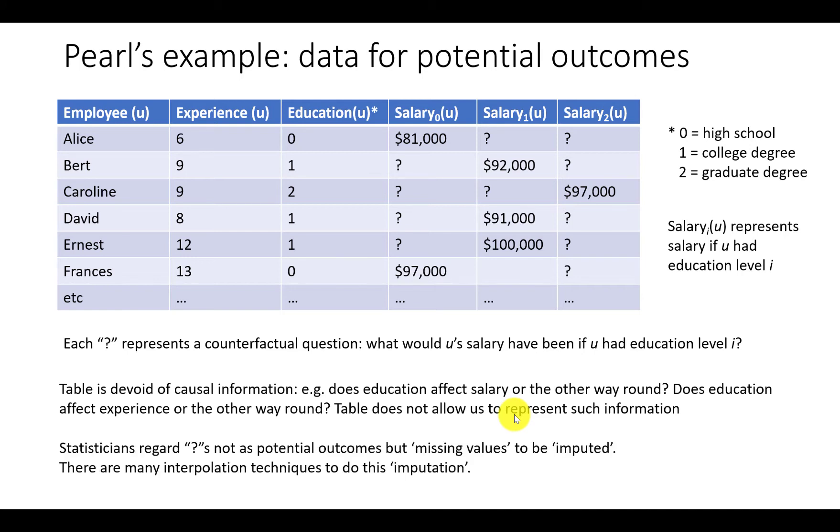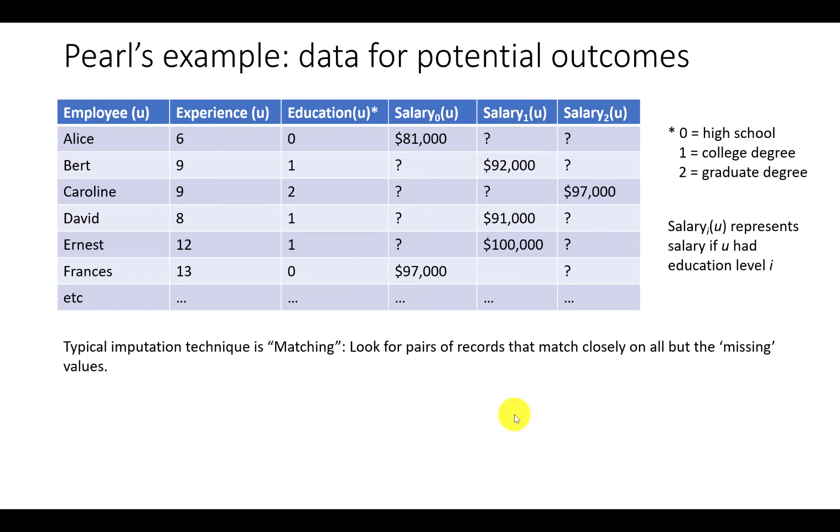Statisticians regard the question marks not as potential outcomes but rather as missing values to be imputed. There are many interpolation techniques to do this imputation. A typical imputation technique is matching where we look for pairs of records that match closely on all but the missing values.